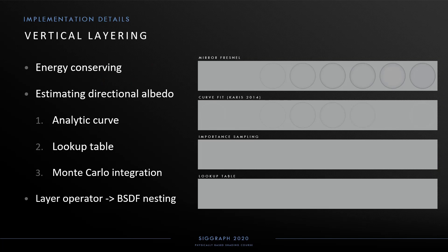Being dielectrics, these nodes are layerable and can be placed as a coating on top of other BSDFs using the layer operator. We implement vertical layering by albedo scaling, estimating the top layer's directional albedo and scaling the response from layers below by the inverse of this. We support three different methods for estimating the albedo: analytic curves using a curve fit, lookup tables pre-calculated using Monte Carlo integration, or Monte Carlo integration on the fly at runtime. The wedges show a furnace test comparison — using Monte Carlo integration with 64 samples gives almost perfect results, while a lookup table achieves similar results and avoids runtime sampling.